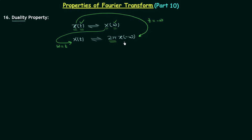So in this way we will have the signal x(−ω). I know it is a little bit difficult to understand the duality property initially, but after understanding its proof and solving a few examples you will understand it completely. Let's move towards the proof of the duality property. I will use the inverse Fourier transform to prove it — using the inverse Fourier transform we obtain signal x(t) from its Fourier transform X(ω).